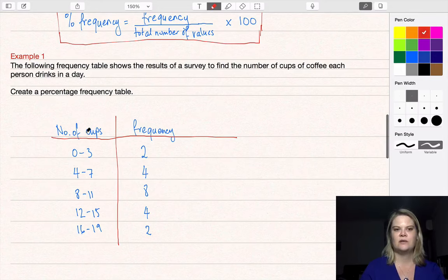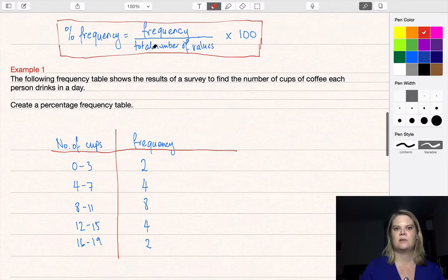Here are the class intervals: 0 to 3 cups. There are 2 people who indicated they drink 0 to 3 cups of coffee in a day. Once we have these frequencies, we need to use the formula.